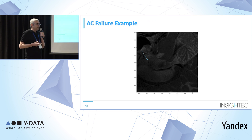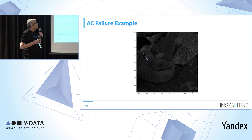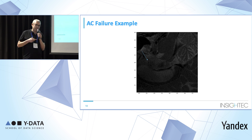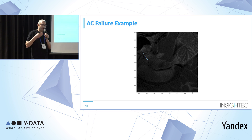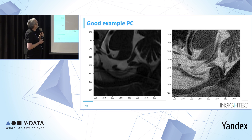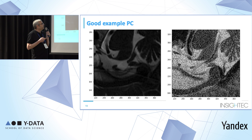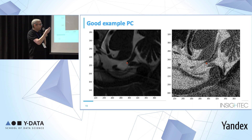This is an example where the predictor didn't find the AC and PC. In such cases, it's acceptable — as it's supervised by the operator, these cases can be fixed, or we can retake the MR volume. A similar example for the posterior commissure shows very close results, demonstrating that it handles different types and modalities of images well.